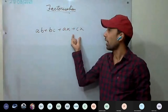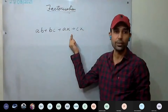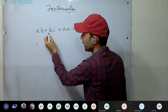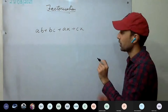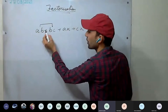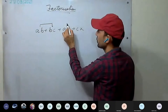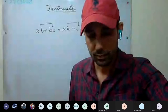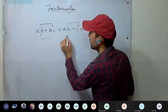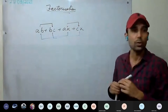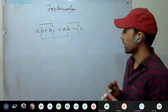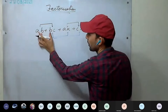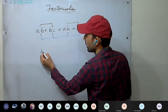The second method is grouping. We have four terms, an even number. We have to group them in pairs of two — group those two terms which have something common. We can group first and second, and third and fourth. Or we can group first and third, and second and fourth — two kinds of grouping are possible. Taking the first grouping: ab + bc — b is common, take b outside to get b(a+c). Then ax + cx — x is common, giving x(a+c).